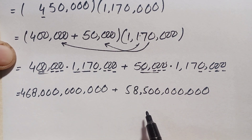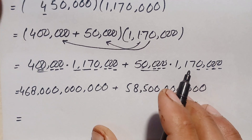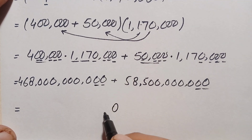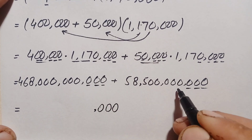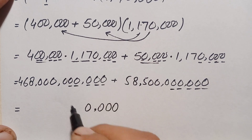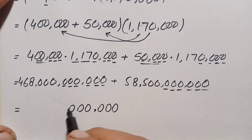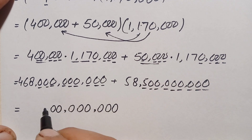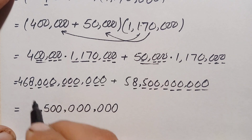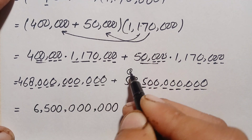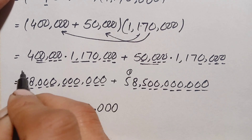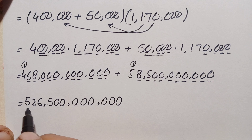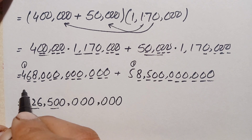Finally we add 468 billion and 58 billion 500 million. Starting from the rightmost position, all trailing zeros sum to zero. Then 8 plus 8 is 16, write 6 carry 1; 5 plus 1 is 6; 6 plus 6 is 12, write 2 carry 1; 4 plus 1 is 5. So the final answer is 526 billion 500 million.